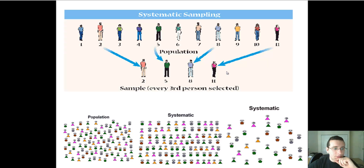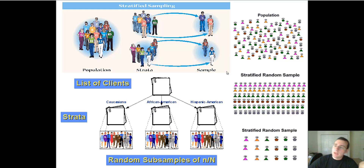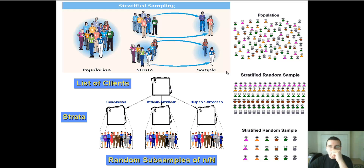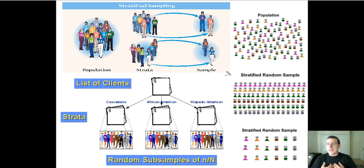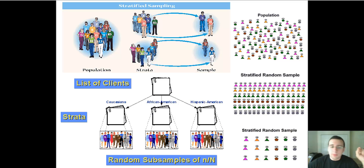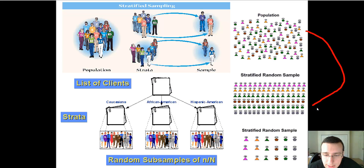Another method is stratified sampling. Let's say you want to make sure your final groups represent different groups that exist in the population — Caucasians, African-Americans, Hispanic-Americans. Before sorting people into groups, you separate the population into what we call strata. You create these categories yourself, line up each group, and then randomly sort from each stratum into the sample to make sure people from each group are represented.